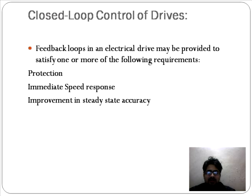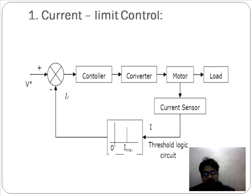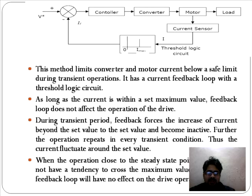There are a few schemes we are going to cover in this lecture on closed loop control drives. The first scheme is current limit control. This current limit control scheme limits the converter and motor current below a safe limit during transient operation — basically during starting, braking, acceleration, and deceleration. It uses a current feedback loop with threshold logic circuitry.